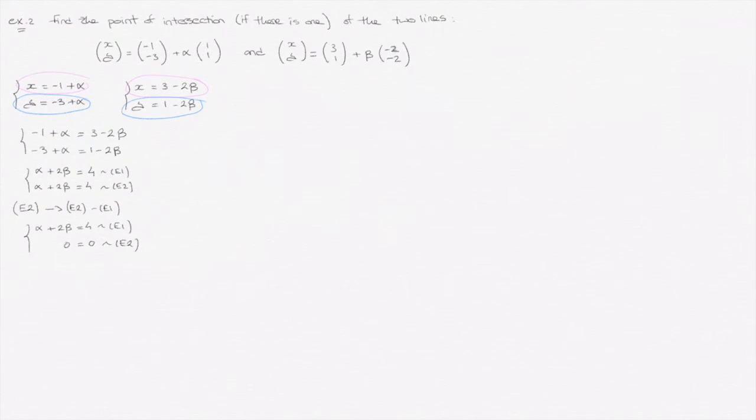So my second equation is now 0 = 0. Now, when this happens, as soon as we see 0 = 0, this means there's an infinite number of solutions.